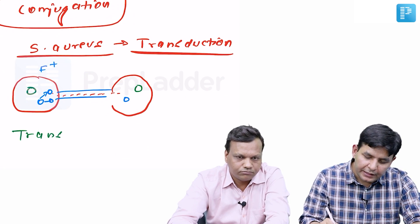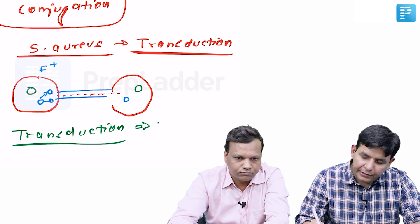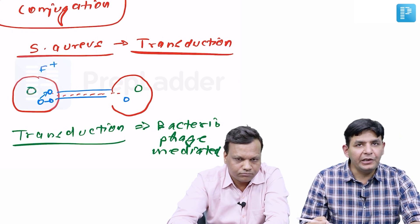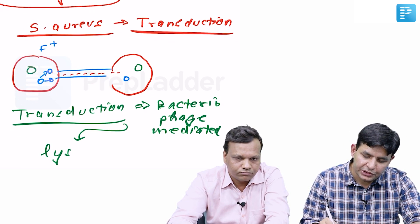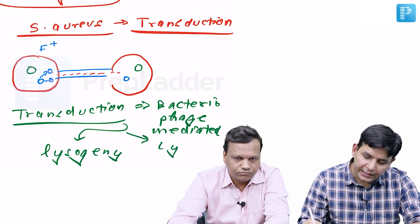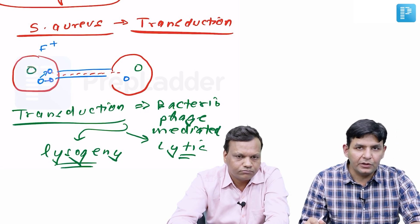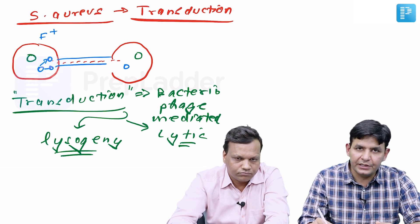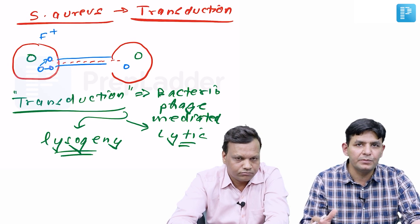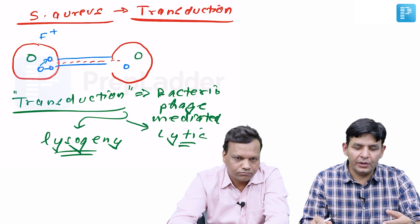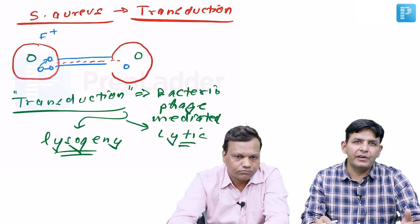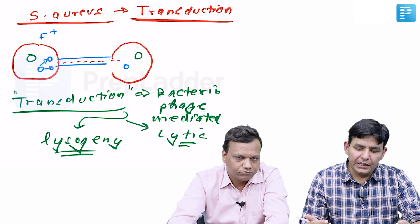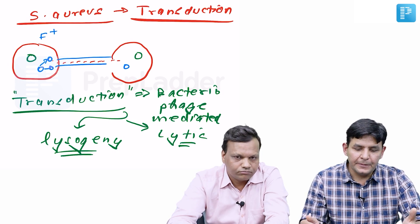Whenever transduction is mentioned, think bacteriophage — transduction is bacteriophage-mediated. The phage is of two types: lysogeny and lytic. In lysogeny, the phage combines with bacterial chromosomal material; in lytic, it destroys bacterial chromosomal material and takes control of the cell. Remember transduction for Staph aureus, and conjugation for most others. Transformation, discovered by Griffith, involves transfer through free DNA — it is present but very much less common.